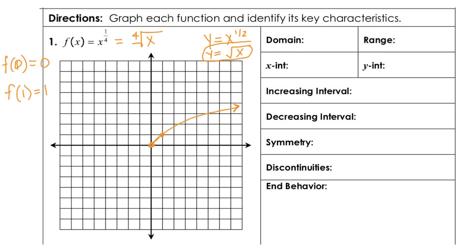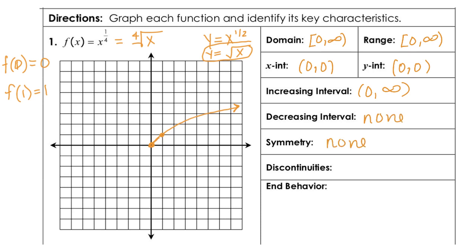Talking about domain and range – the domain is not all real numbers; the domain is going to be from 0 to positive infinity, and the range is also from 0 to positive infinity. Your x and y intercepts are both at (0, 0). The increasing interval is from 0 to infinity. There's no decreasing, and there is no symmetry. No discontinuities. For end behavior: as x approaches infinity, f(x) is also approaching infinity. And as x approaches 0, f(x) is also approaching 0.